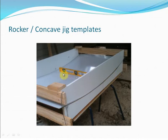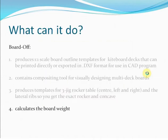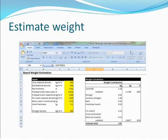Board Off includes weight calculations. Here is a snapshot of how that looks in Board Off — you put in a whole stack of parameters about the inserts and the materials that you use, and Board Off will give you a breakdown of the different contributions to weight of the various sections. In this example you can see the core, which is wood, is heavier than the laminate, and the board comes out at about 3 kilos, which is on the heavier side.